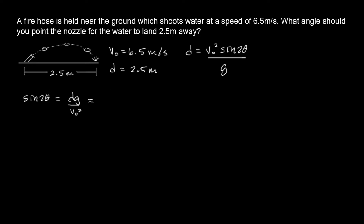I'm going to use a positive g here. Notice that if gravity were negative, the right side would be negative. But everything is happening above ground, which means sine 2θ equals a positive value. Treating this like sine β equals some positive number, the sine is positive in quadrants one and two, so we're going to be in two different quadrants.